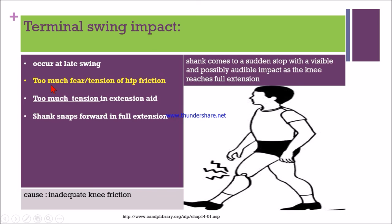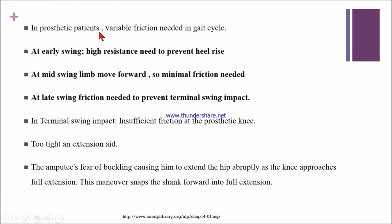To remember the causes, think of too much fear or tension of hip friction. In prosthetic patients, variable friction is needed during the gait cycle. At early swing, great resistance is needed to prevent knee buckling. At mid swing, the limb moves forward and minimum friction is needed. But at terminal swing or late swing, more friction is needed to prevent the swing impact.